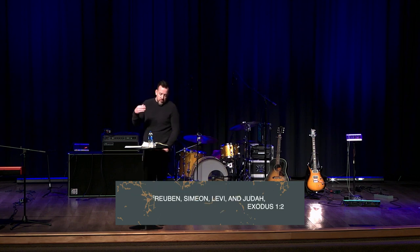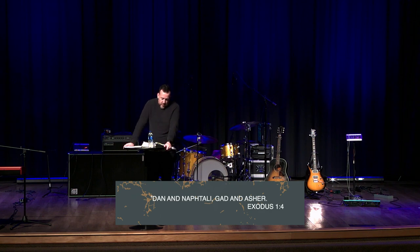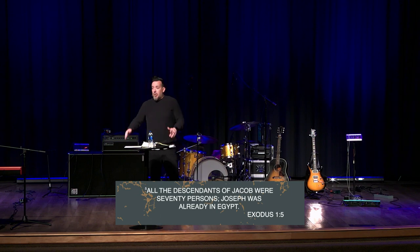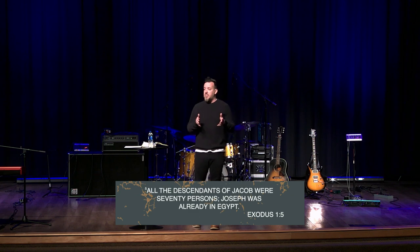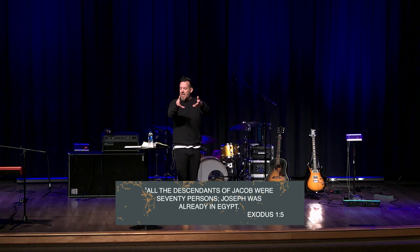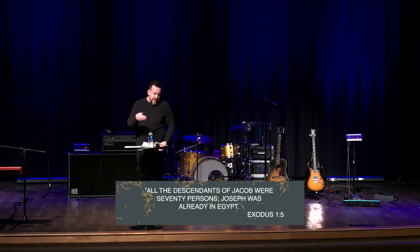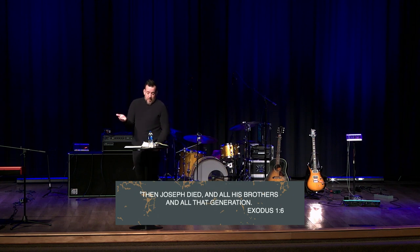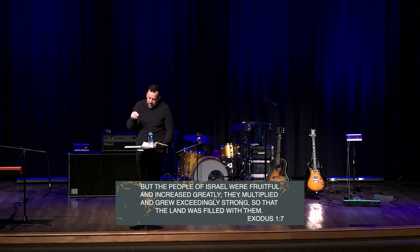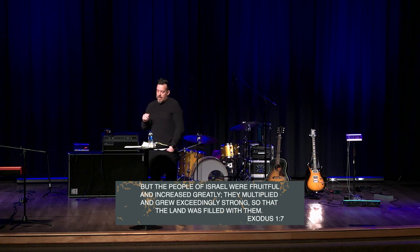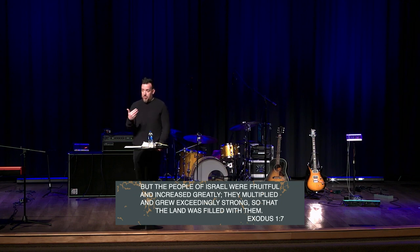Verse 2 lists the sons of Jacob: Reuben, Simeon, Levi, Judah, Issachar, Zebulun, Benjamin, Dan, Naphtali, Gad, and Asher. All the descendants of Jacob were 70 persons — circle that and remember it. When they first get into Egypt, there are 70 people. That represents probably the men, the direct male descendants. Joseph was already in Egypt working for Pharaoh. Then Joseph died, and all his brothers and all that generation. But the people of Israel were fruitful — circle that. They increased greatly. They multiplied — circle that. And they grew exceedingly strong, so that the land was filled with them — circle that word.